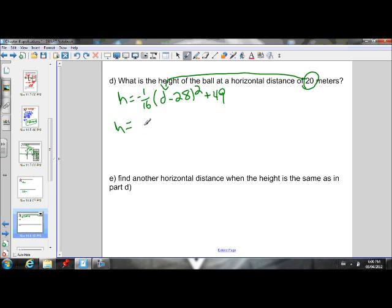If we go ahead and do that, we get h equals negative 1 over 16, times 20 minus 28 squared, plus 49. If you go ahead and solve that question, remember your BEDMAS rules. Do the brackets first, then the exponent, then the multiplication, and then the addition. If you go ahead and do that, you will get the height to be 45 meters.